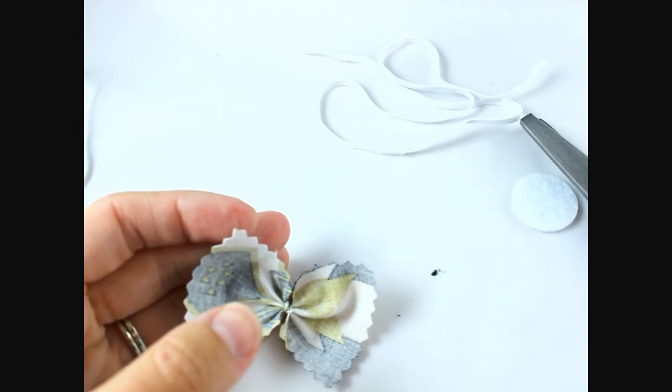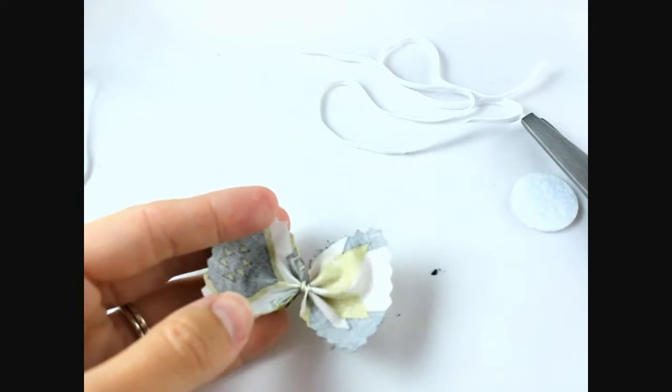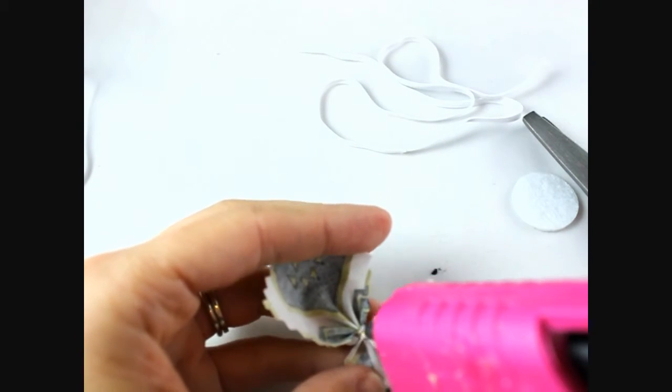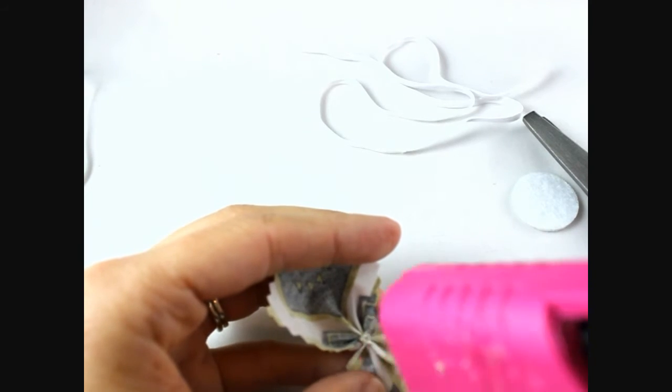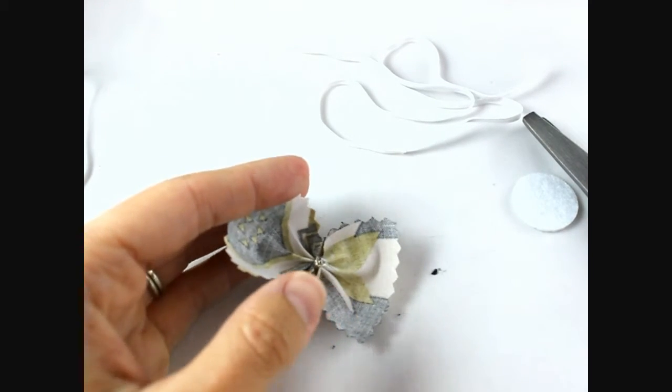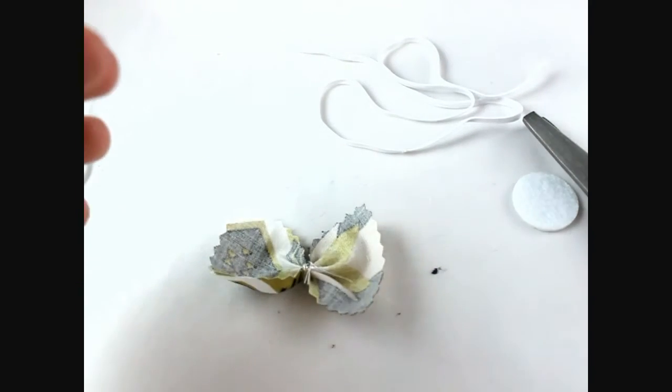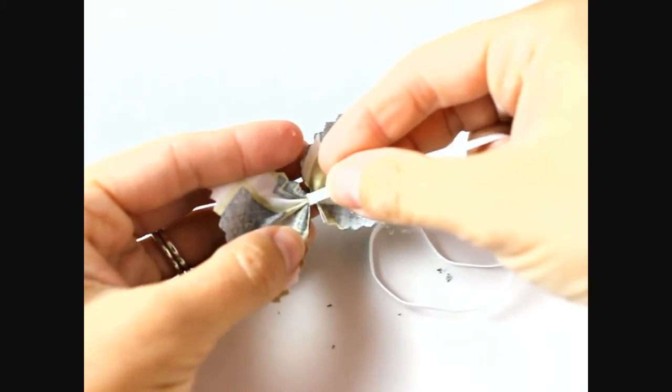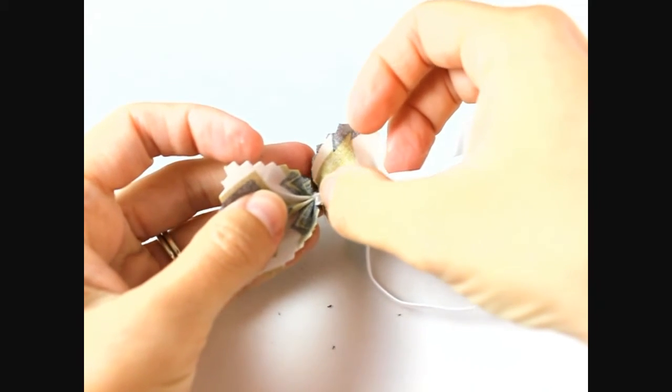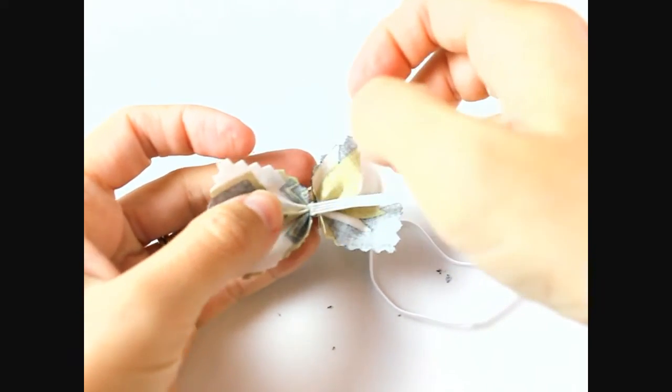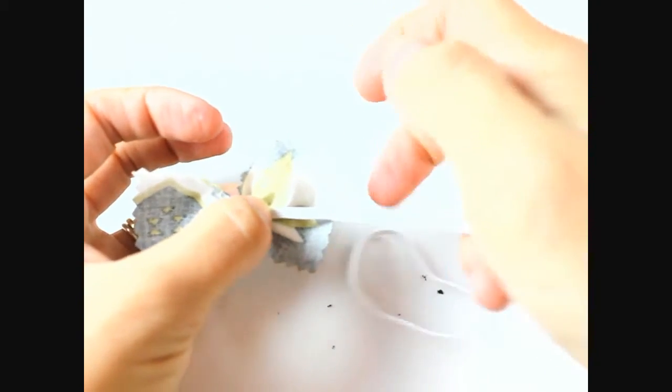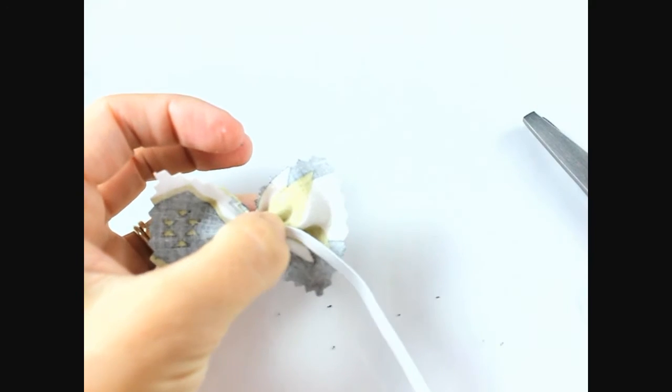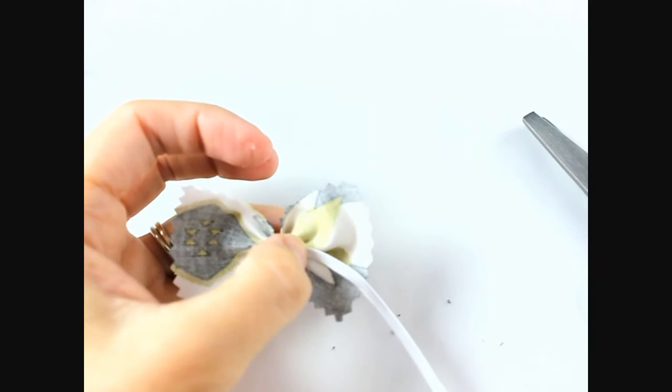Then get your hot glue and put a dot right on the back. Get your skinny elastic and put it on the side, just tap that down. I had someone ask me yesterday what kind of hot glue to use.